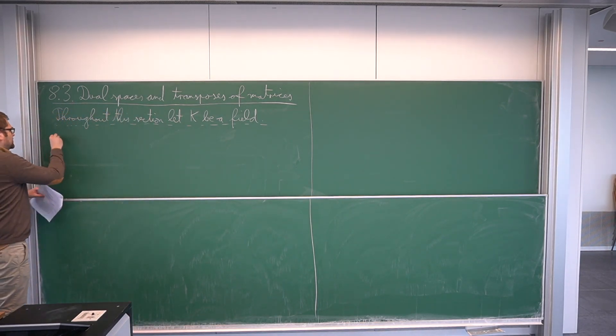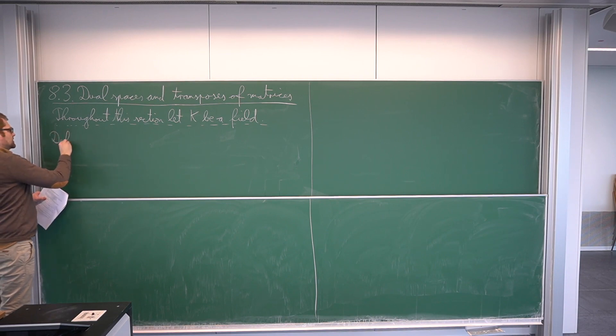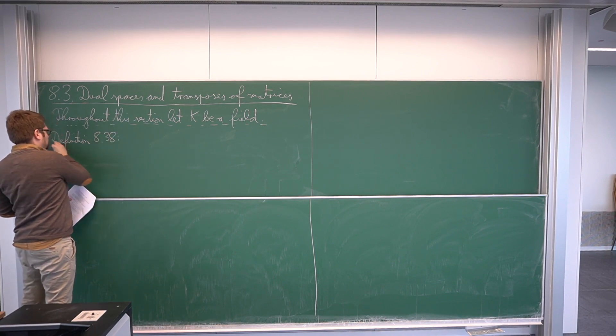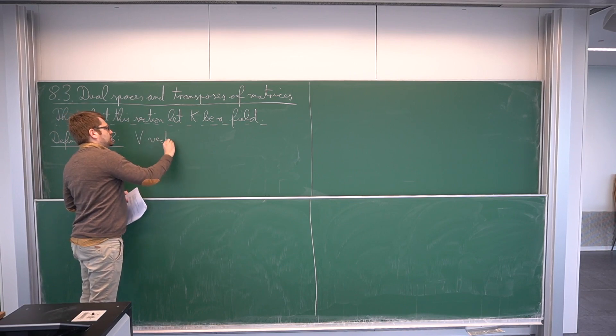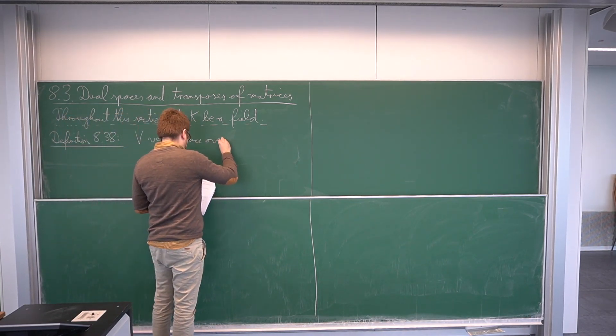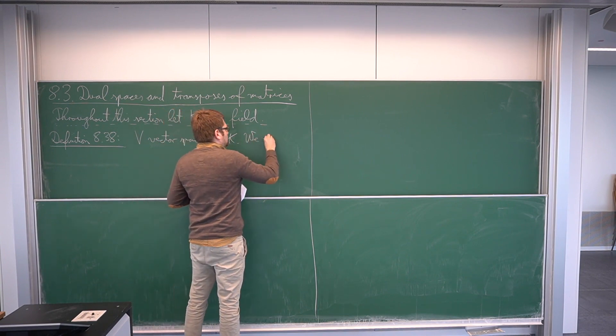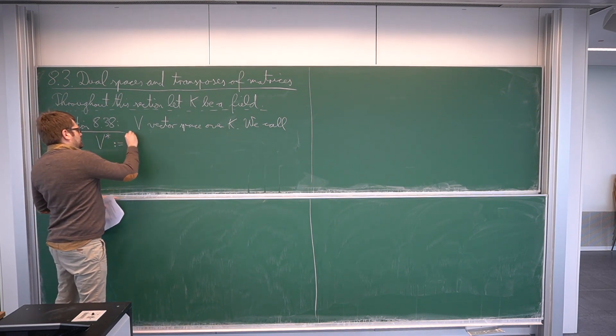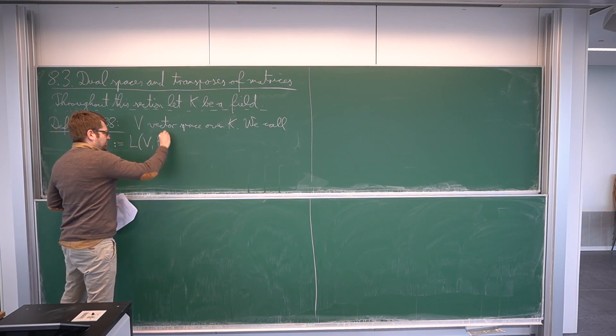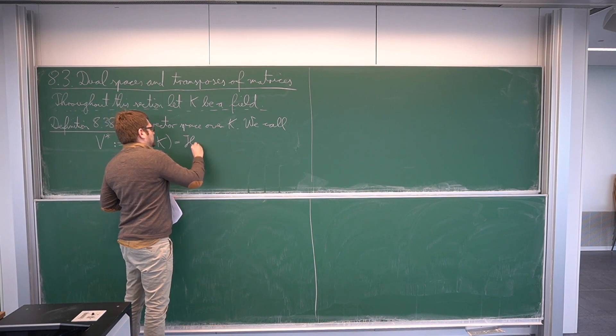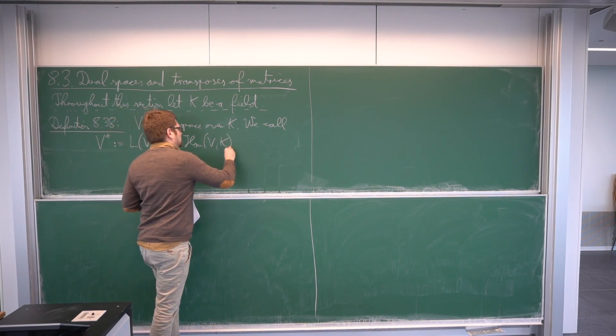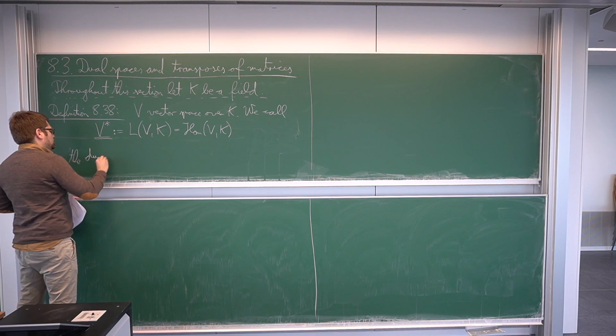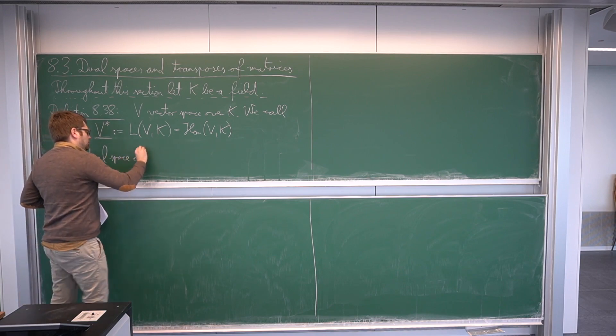Without further ado, let me first of all define the notion of a dual space. Definition 838. We start with some vector space over k, we call v. And we call the space v star, which is defined as the space of linear maps from v into the field k, or in the other notation, hom v k. This space is called the dual space of v.